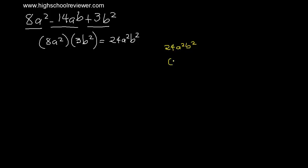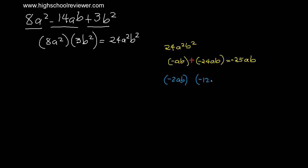Let's try negative ab and negative 24ab. Both are negative because their product must be positive, and their sum must be negative. Negative ab plus negative 24ab gives negative 25ab, which is not equal to negative 14ab. Let's try negative 2ab and negative 12ab. Negative 2ab plus negative 12ab gives negative 14ab, which is equal to our second term. We will use these factors.